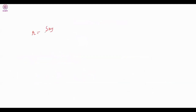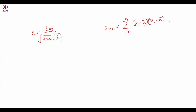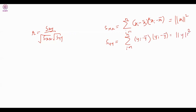Here r = SXY / (√SXX · √SYY), where SXX = Σ(xᵢ − x̄)², SYY = Σ(yᵢ − ȳ)², and SXY = Σ(xᵢ − x̄)(yᵢ − ȳ). So SXX is like |x|², SYY is like |y|², and SXY is the dot product x·y of the centered vectors.